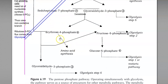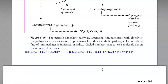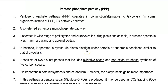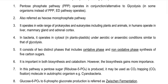In the non-oxidative branch, ribose 5-phosphate is used for nucleotide synthesis in growing cells. Glyceraldehyde 3-phosphate and fructose 6-phosphate are channeled back into glycolysis, while erythrose 4-phosphate is required for synthesis of aromatic amino acids like tryptophan, tyrosine, and phenylalanine. Looking at the overall reaction: 6 molecules of glucose 6-phosphate in the presence of 12 molecules of NADP+ are converted into 5 molecules of glucose 6-phosphate, 6 molecules of carbon dioxide, and 12 molecules of NADPH. The pathway operates in conjunction with or as an alternative to glycolysis, and in certain organisms the ED pathway plays an alternative role in energy generation. It is also referred to as the hexose monophosphate pathway.